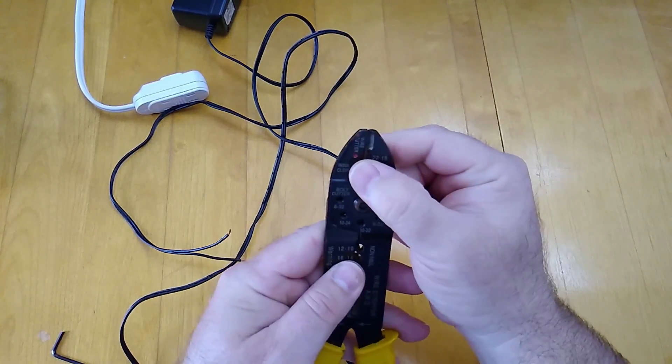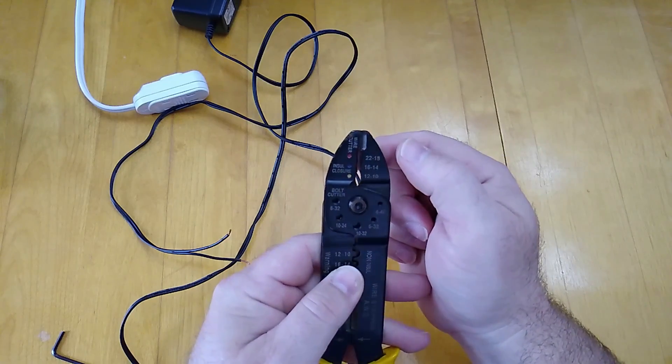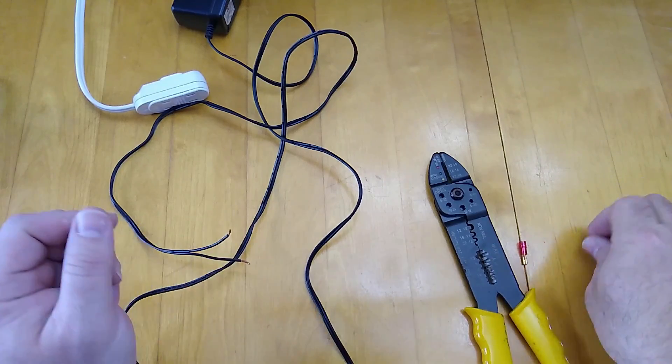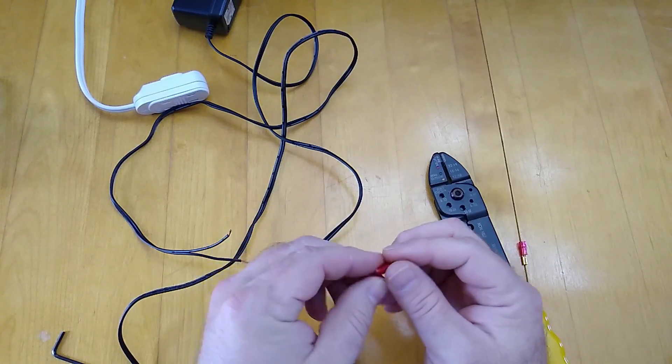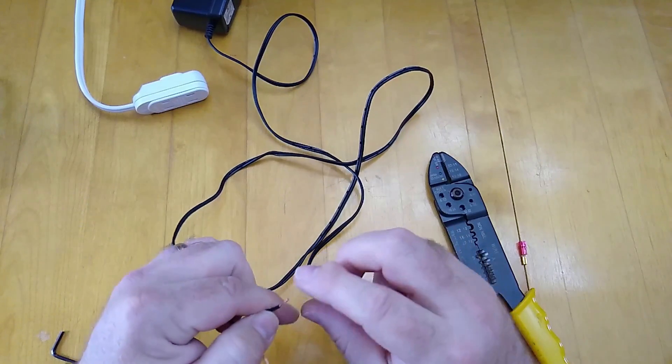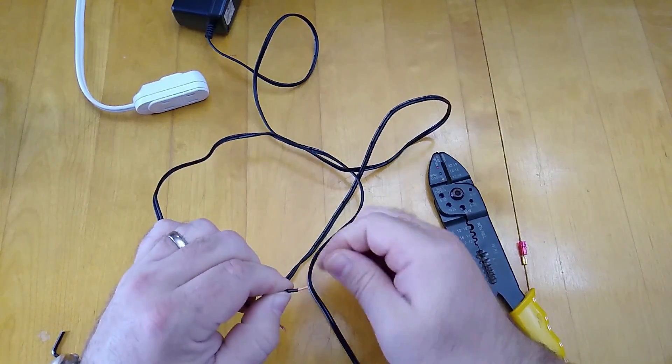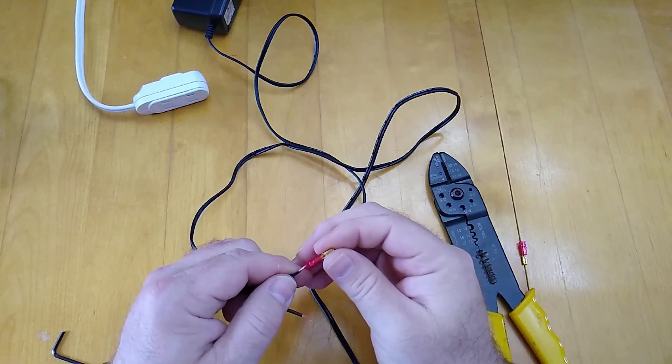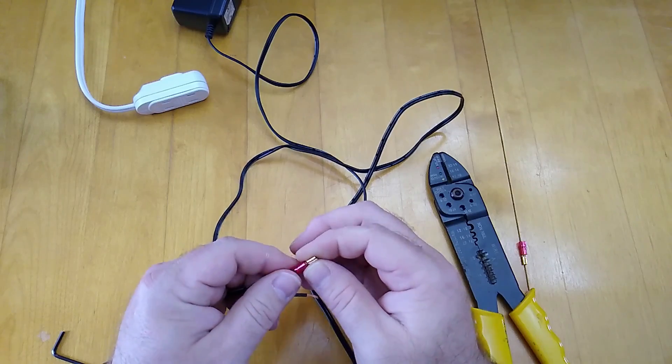Since these are made with a red end on them, that means you'll use the part of the crimper tool that is marked with a red dot. All you do is put the stripped end up into the metal part of this crimp on connector and crimp it down using the red dot section of the crimper tool.